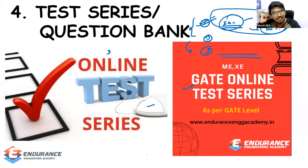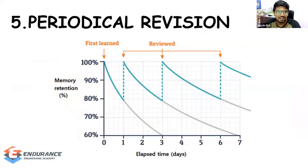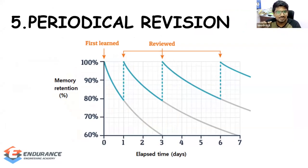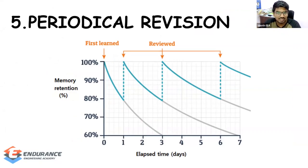The last one — the fifth step — is periodical revision. So to summarize the five steps: one is concepts learning, two is PYQ, three is short notes, four is test series, and five is periodical revision. The idea behind periodical revision is that if you study something once, results can be very disturbing — meaning you forget a lot over time.